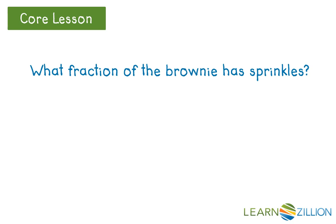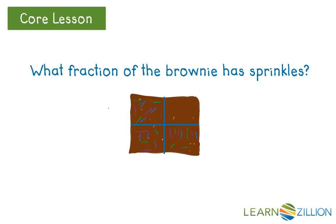What fraction of the brownie has sprinkles? If I partition this brownie into four equal shares, I know each region is called one-fourth. Now I need to count how many fourths have sprinkles on them. I see one-fourth, two-fourths, three-fourths of my brownie has sprinkles. Or I could say three-quarters of my brownie has sprinkles.